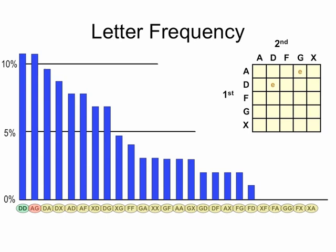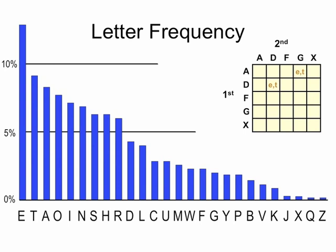We're going to guess that E is either equal to DD or AG. Why E? Because E is the most common letter in the English language, so it's a fair guess. We're not guaranteed — E might also be DA or DX, or even one further down — but it's most likely to be one of the first two. That's where we start our search, and if it doesn't work, we progress downward.